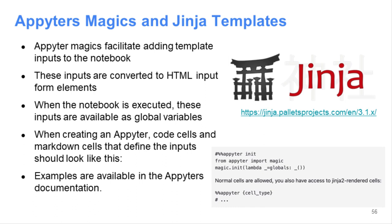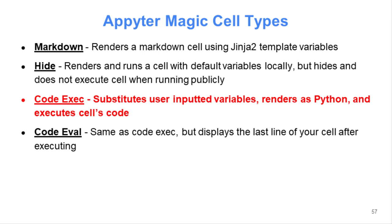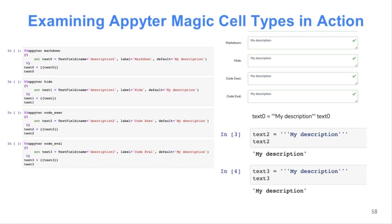When it gets compiled, the code that converts it to a regular Jupyter notebook knows what to do. The Appyter magic cells are added to the notebook and can be of four different types: a markdown type that adds markdown you can template, hide cells which are cells you won't see but are in the notebook, code exec cells, and code eval cells.